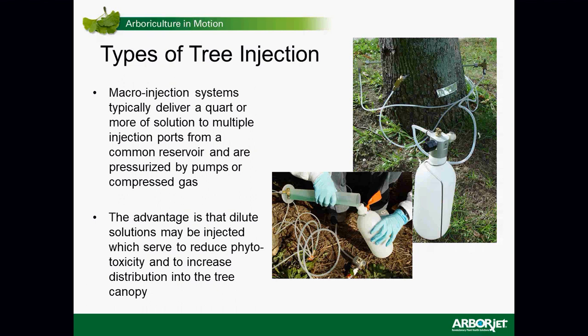Macroinjection systems typically deliver a quart or more of solution to multiple injection points from a common reservoir, pressurized by pumps or compressed gas. The advantage is that a dilute solution may be injected, which reduces phytotoxicity and increases distribution in the tree canopy by dropping viscosity to make uptake a little faster.